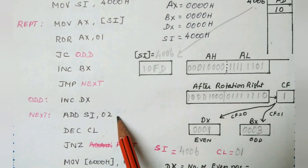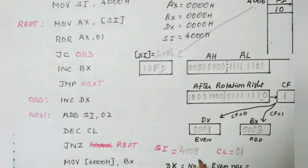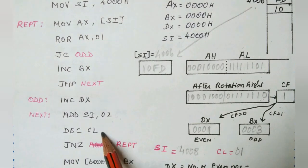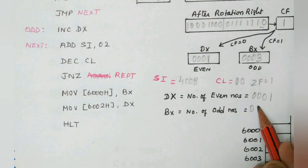Again I am incrementing the SI register by 2 so that it points to location 4008. As well as I am decrementing CL register by 1. Then CL becomes 0. So whenever the CL register becomes 0, the zero flag sets.